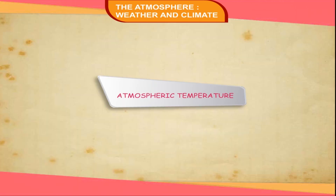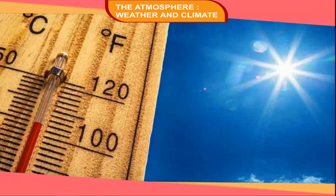Atmospheric Temperature. The sun is the main source of heat and light for the earth. It radiates energy in all directions. Being far away from the sun, the earth receives only a very small fraction of this energy. The solar energy received by the earth is called solar insolation. This insolation is the driving force to heat the earth's atmosphere, and it varies from place to place. More insolation is received on and around the equator and much less at the poles.